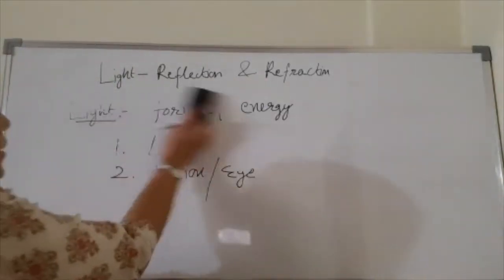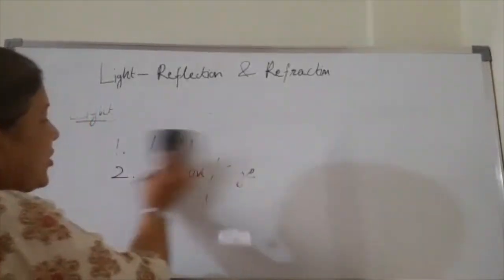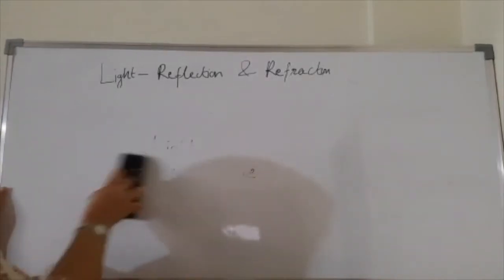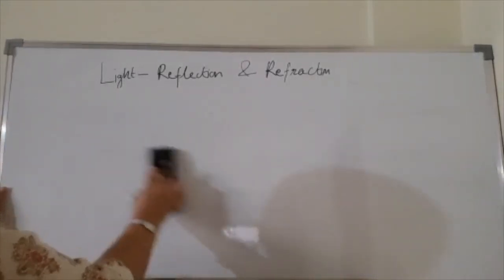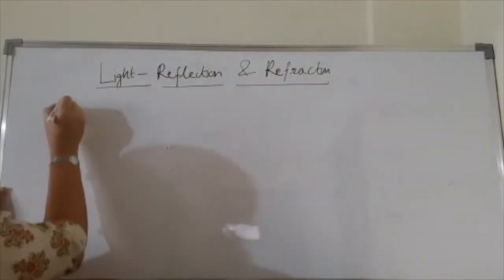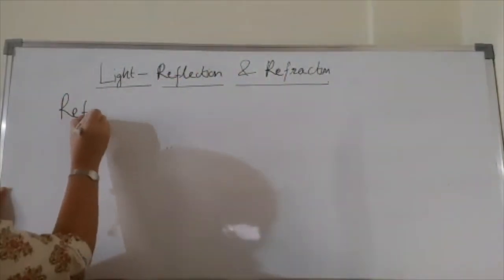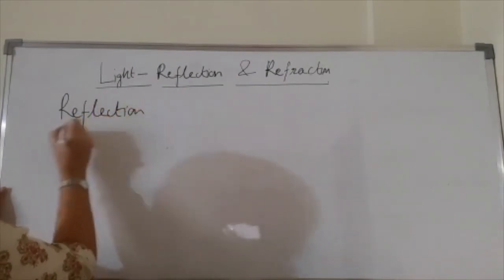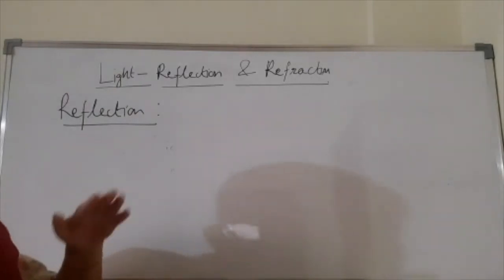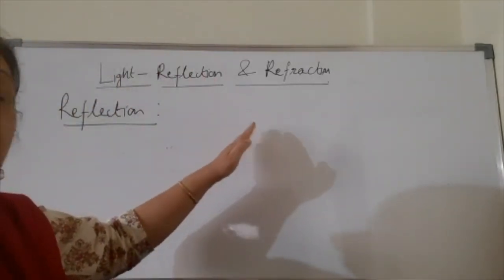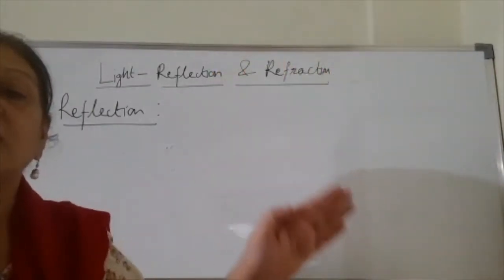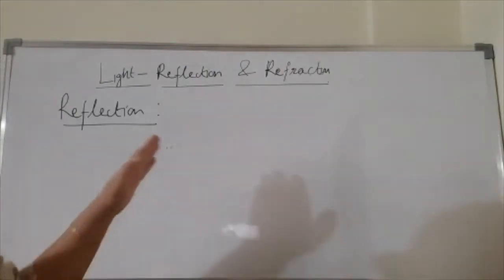So we will start with what is reflection, the laws of reflection, and all the terms pertaining to reflection. What is meant by reflection of light? The light strikes the surface and bounces back in the same medium. This bouncing back of light in the same medium is called reflection.